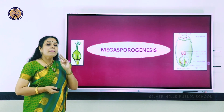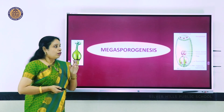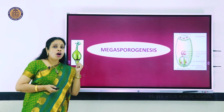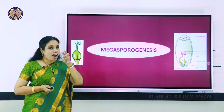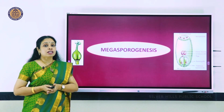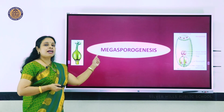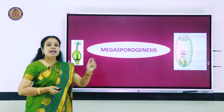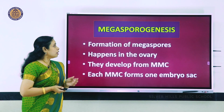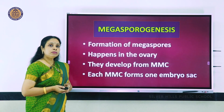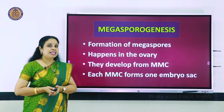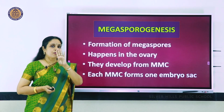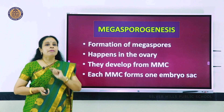We now move on to megasporogenesis. What we are discussing is still pre-fertilization events - gametogenesis. We just saw how the male gamete pollen grain is formed; now we see how the female gamete is formed. It is formed by megasporogenesis from the ovary. The embryo sac forms in the ovary from mother cells called MMC - megaspore mother cells. Unlike PMC which forms four pollen grains, MMC will form only one embryo sac.